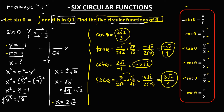Finally, for cosecant theta: cosecant θ = r over y, so r is 3 and y is negative 1, which gives negative 3. So cosecant θ = −3. These are the five remaining circular functions of theta.